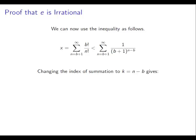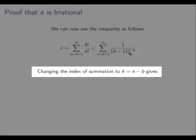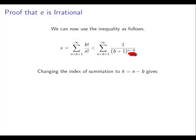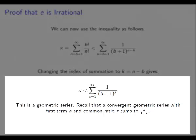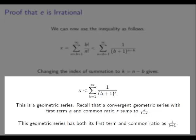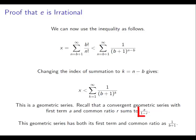What we do now is change the index of summation. We can see there's a power of n minus b, which gets a bit unwieldy when summing over n, so we're going to let k equal n minus b. That gives us that x is less than the summation from k equals 1 to infinity of 1 over (b plus 1) to the k. But of course, this is just a geometric series: 1 over (b plus 1) plus 1 over (b plus 1) squared plus 1 over (b plus 1) cubed, and so on. Recall that a convergent geometric series with first term a and common ratio r sums to a over 1 minus r. Our geometric series has its first term and common ratio both equal to 1 over (b plus 1), so we substitute a equals 1 over (b plus 1) and r equals 1 over (b plus 1) into the formula.